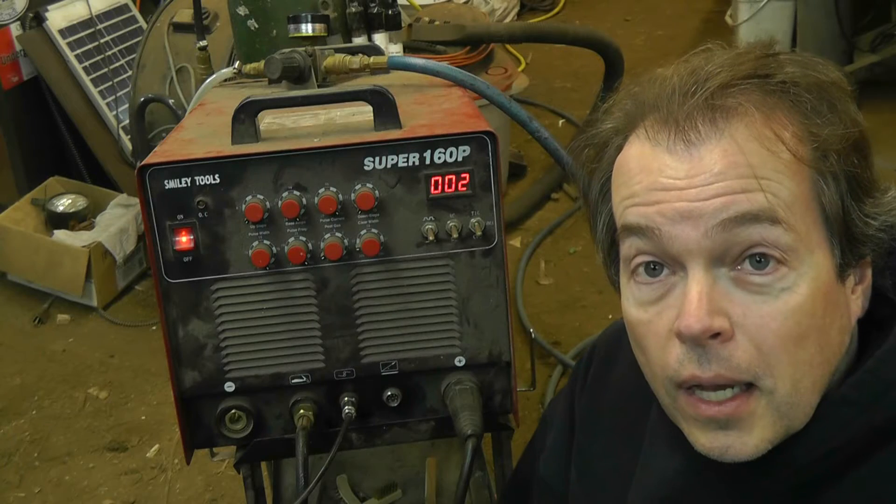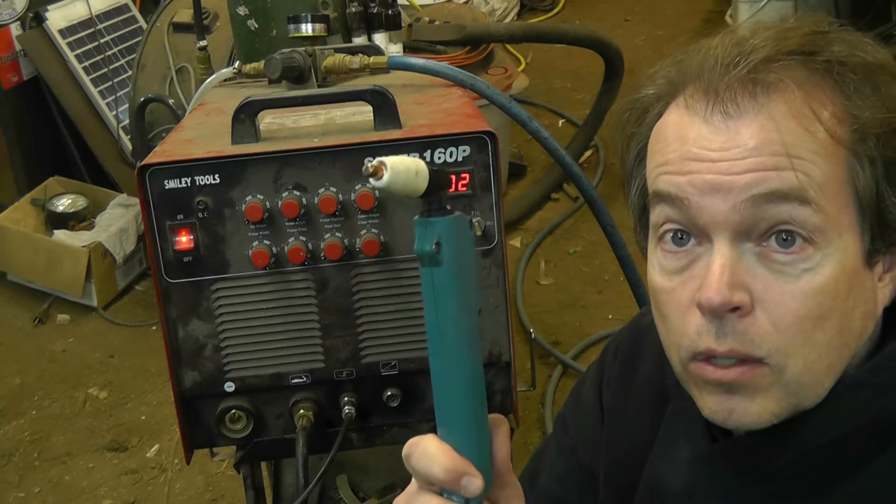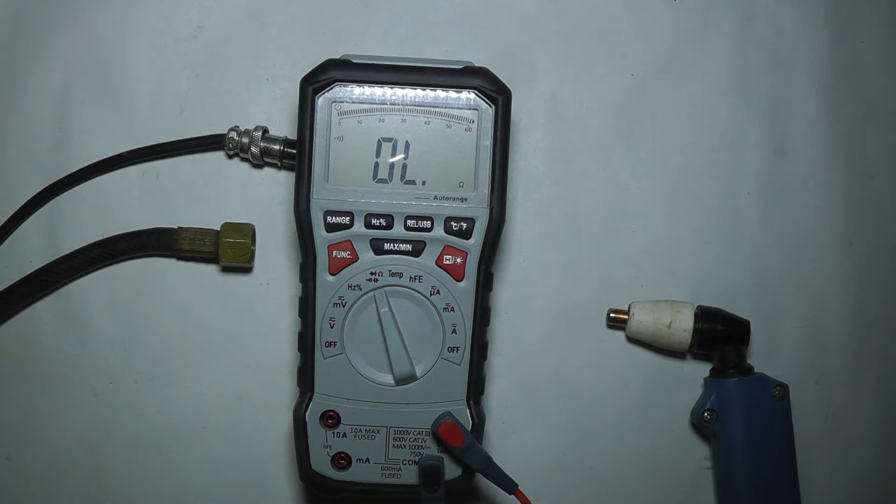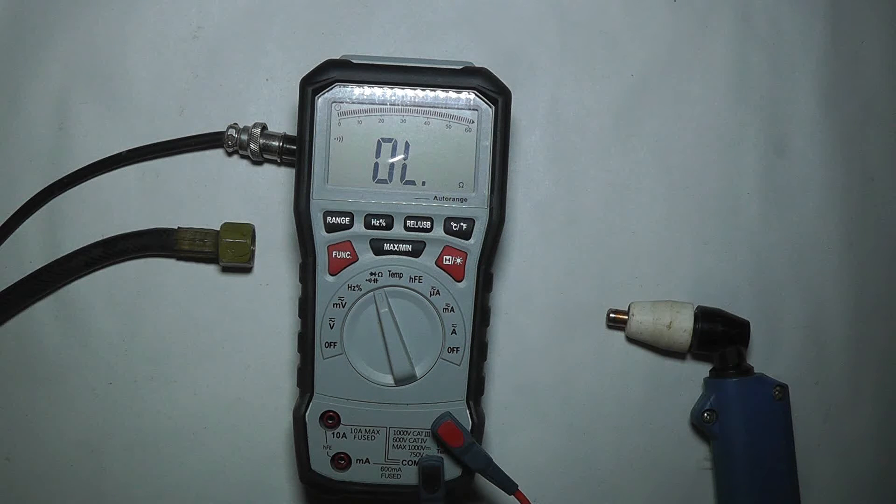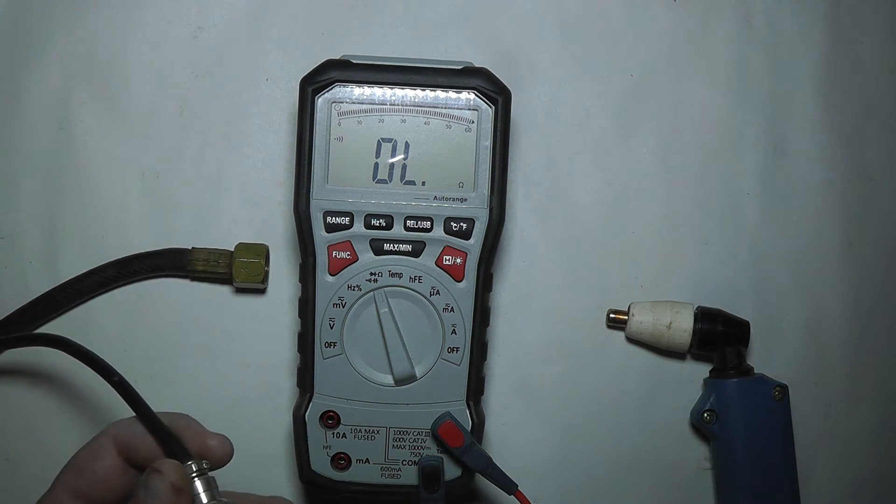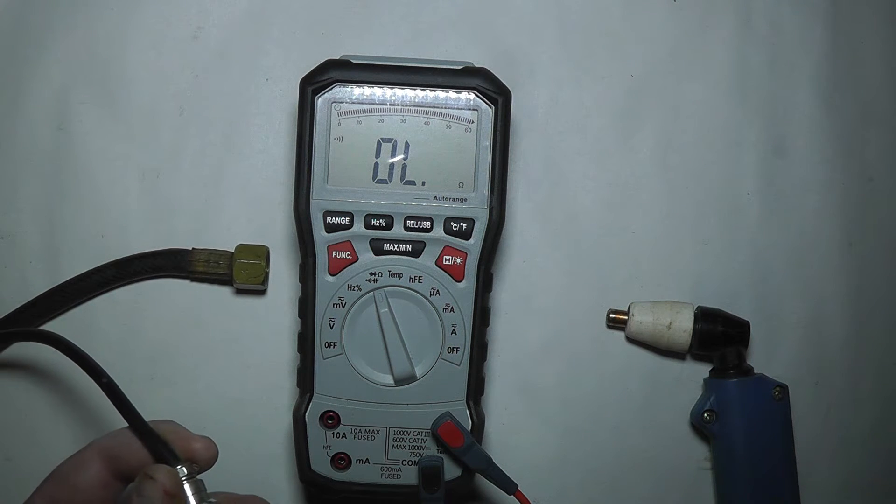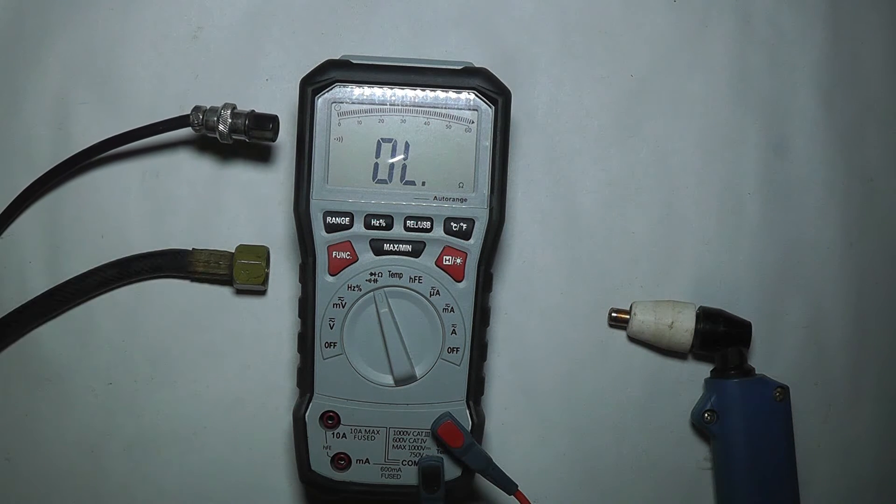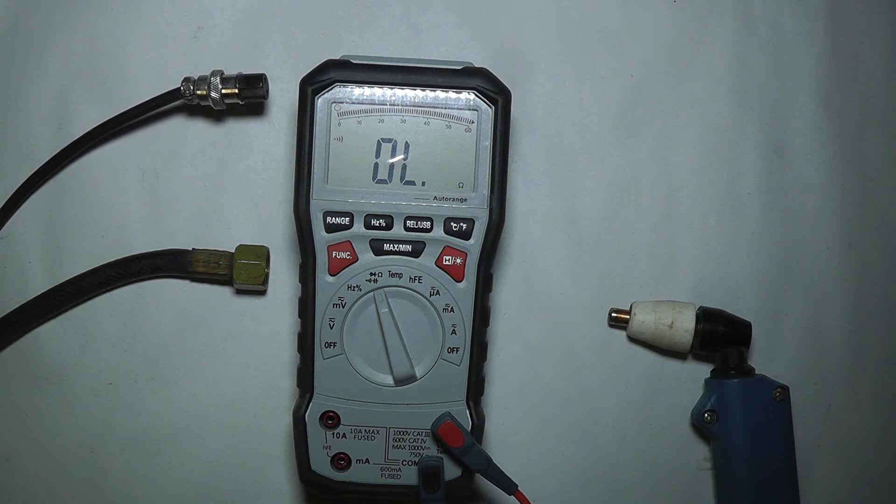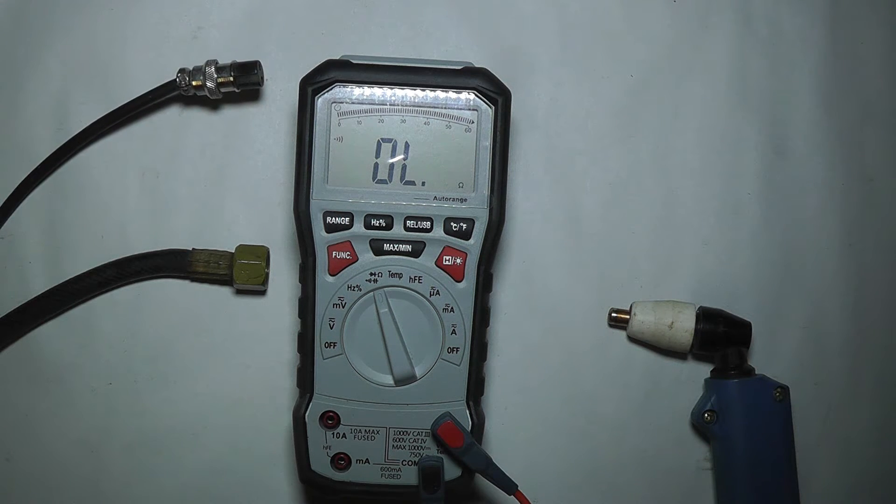At this point we're going to do a basic check of the torch itself. If you've got another unit you can test with, you could try your torch with that, or vice versa. In my case I don't have that luxury, so I'm going to do a basic check. First we'll check that the switch has good continuity. We'll take our ohmmeter on continuity test mode, probe the connector, hit the button, and as we can see that's working fine.